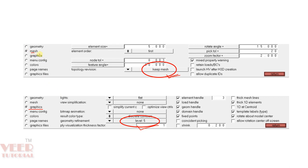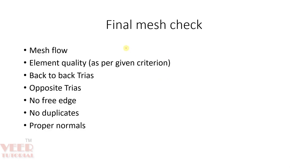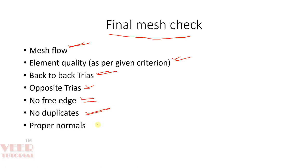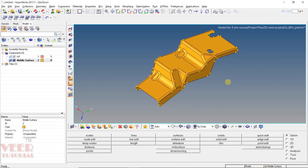When we complete the final mesh, these are the checking parameters: we have to make sure we have a proper mesh flow, element quality is as per the given criteria, there should be no back-to-back trias or opposite trias, no free edges, no duplicate elements, and proper normals. I will share all these PDFs with you for better understanding. After learning the criteria, we will continue in the next lecture and start the meshing.